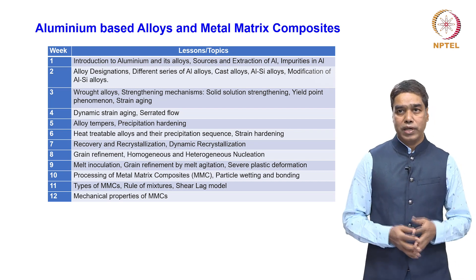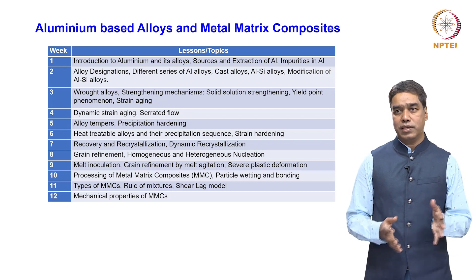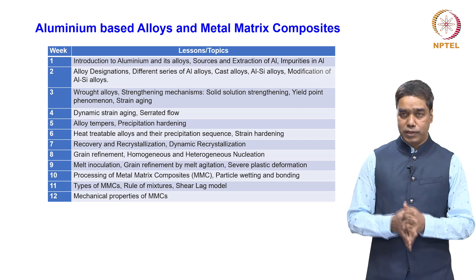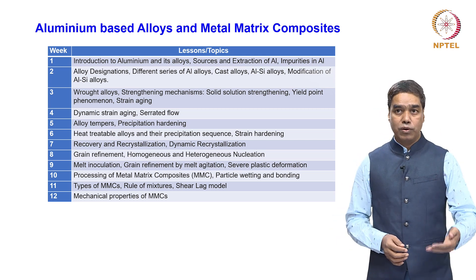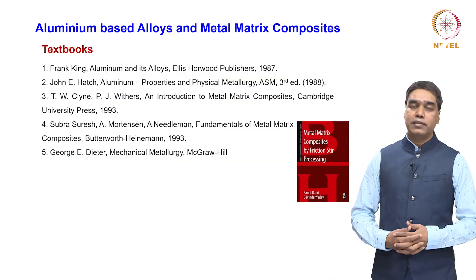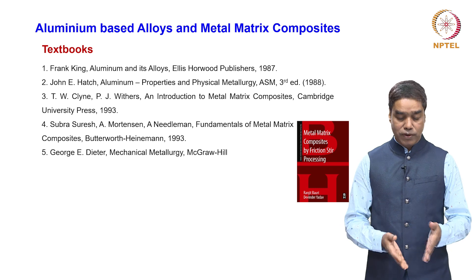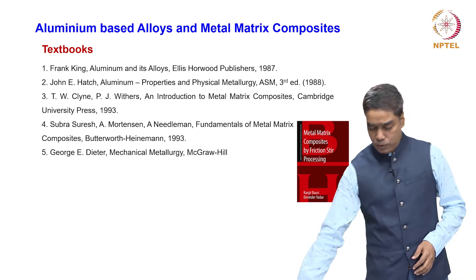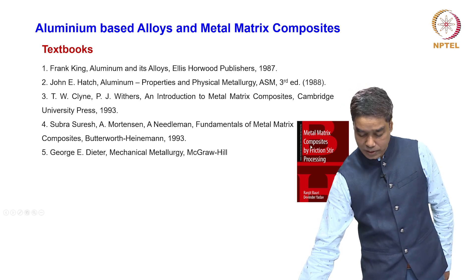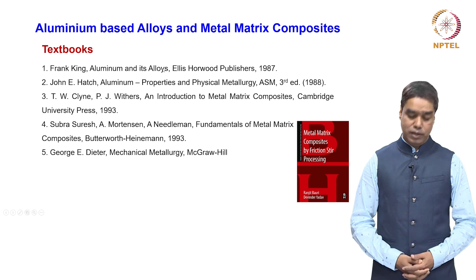In the second half of the course, we are going to cover aluminium-based metal matrix composites, discussing everything about these composites starting from their processing to properties. This is how the course will go in 12 weeks, as you can see from this table. These are the textbooks I suggest for this particular course — here you can see five books, and one more. This book of mine can also be referred for the composite part.